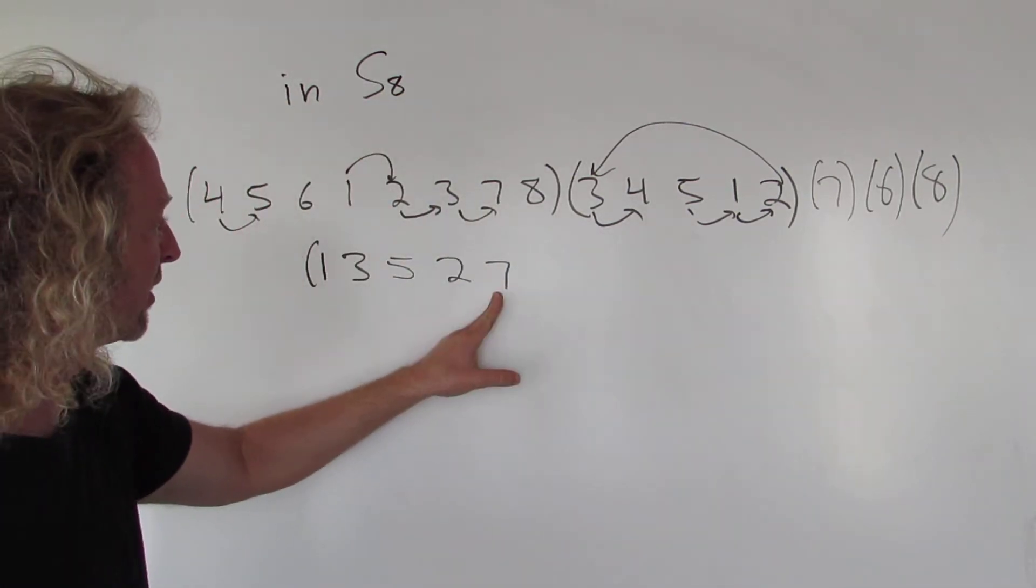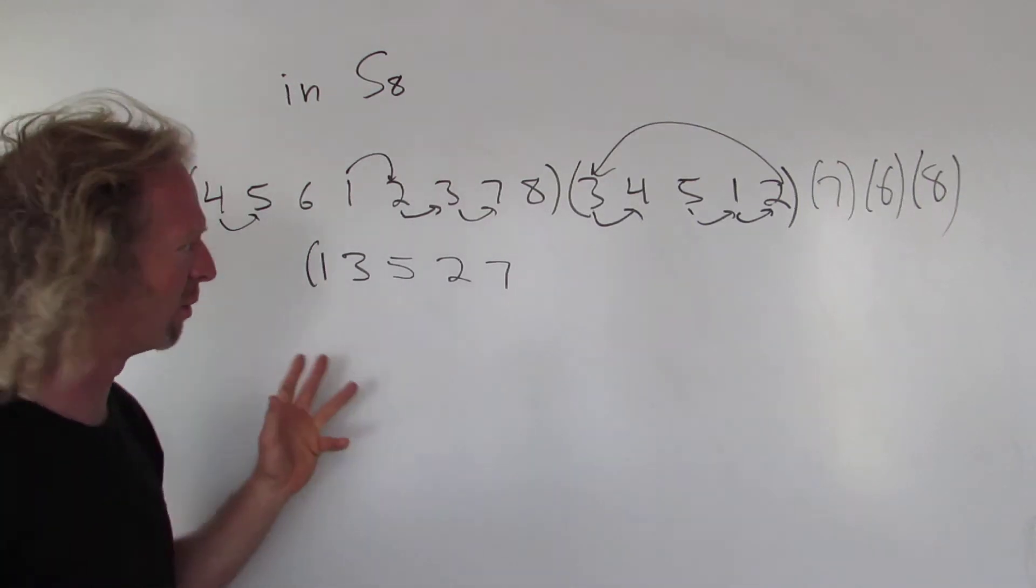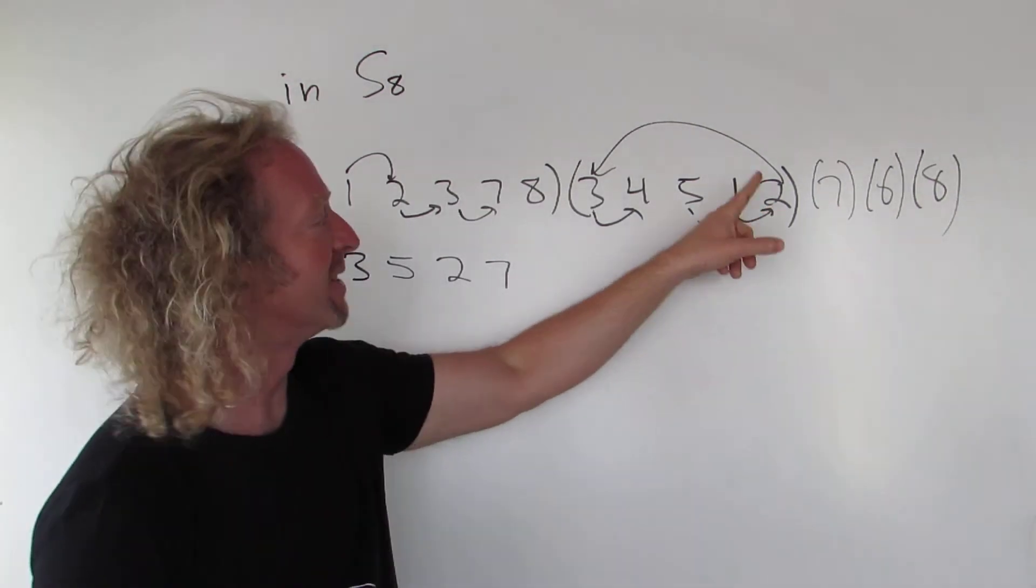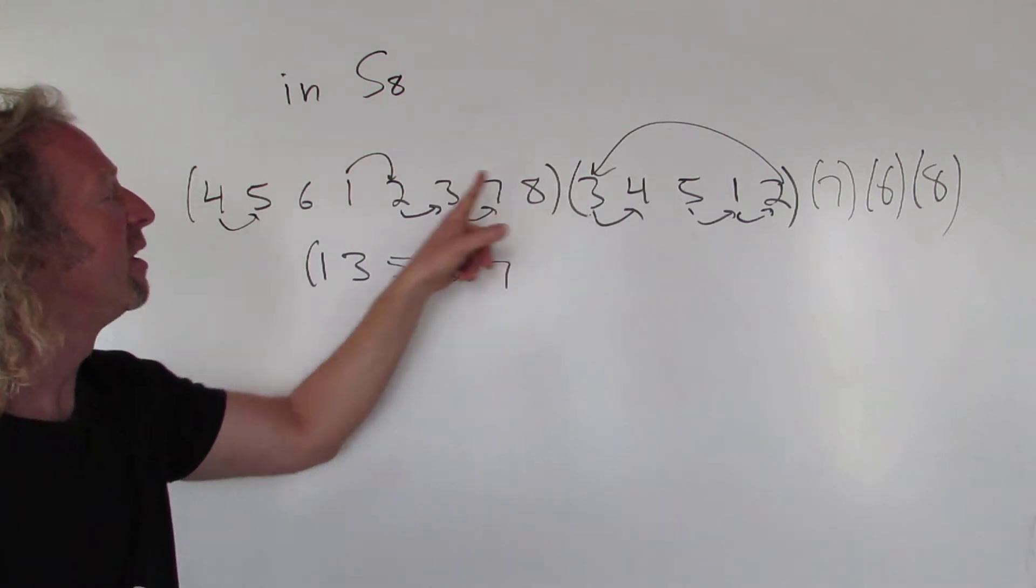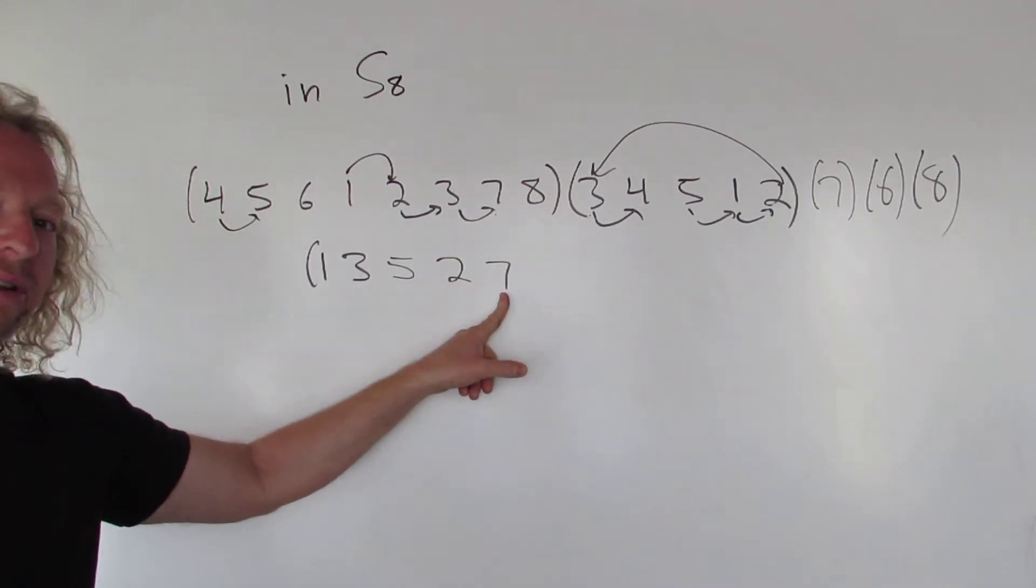So 7. Where does 7 go? I got lost. Let's see. What were we doing? Ah, yes. 2 went to 3. 2 went to 3. 3 went to 7. So 2 goes to 7. Okay, we're back.